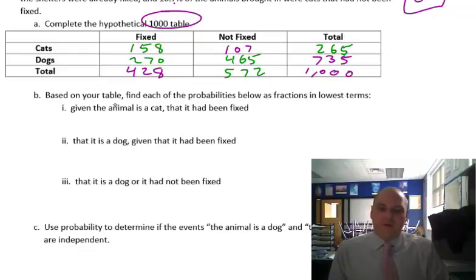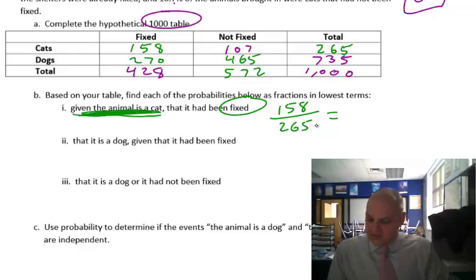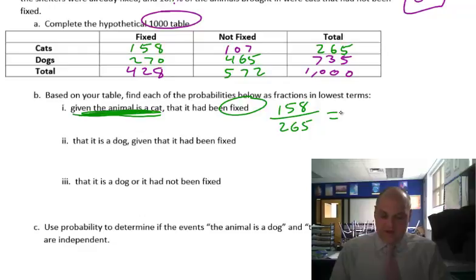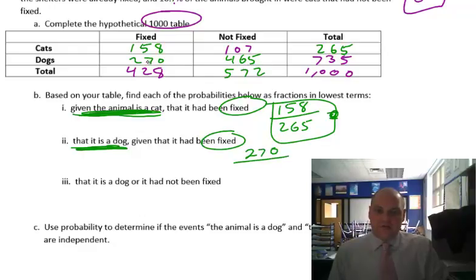Based on your table, find each probability given that it's a cat — so we're only looking at the cats. Fixed given cat: 158 out of 265 cats. That is 158 out of 265, which is 0.596. For fractions in lowest terms, we're leaving it as 158/265. Given dog, fixed: 270 out of 735, and that reduces down to 135 out of 214.